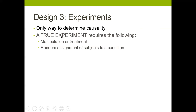To be a true experiment, two things have to be present. First, you need a manipulation or treatment. This means you have to do something to some of the participants that you didn't do to the others — either manipulate a situation so that some participants are exposed to it and others aren't, or give a treatment such as a medicine to some participants and not to others.